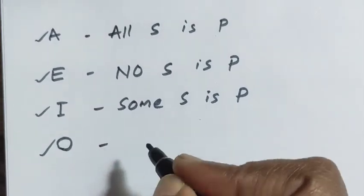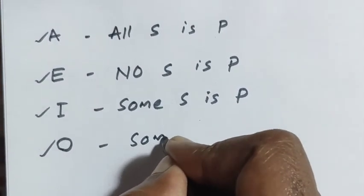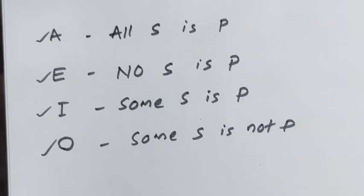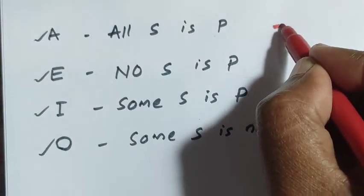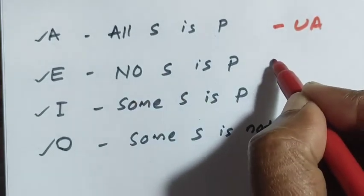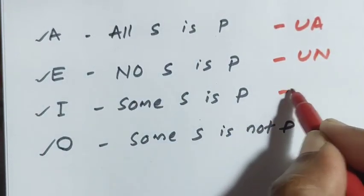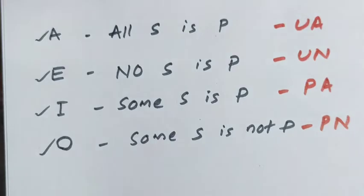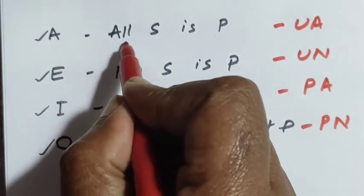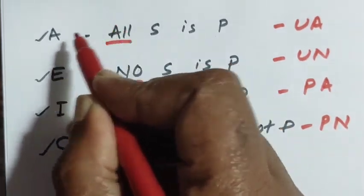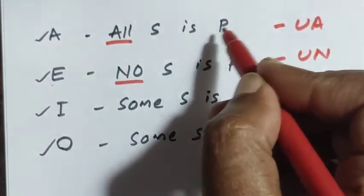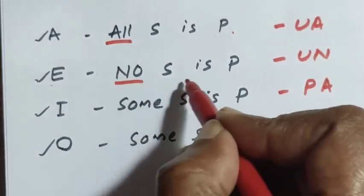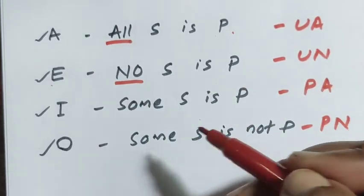The structure of O proposition is 'Some S is not P', which is particular negative. For universal propositions we use 'all' and 'no' — A is universal affirmative and E is universal negative, where 'No S is P' is the universal negative proposition.